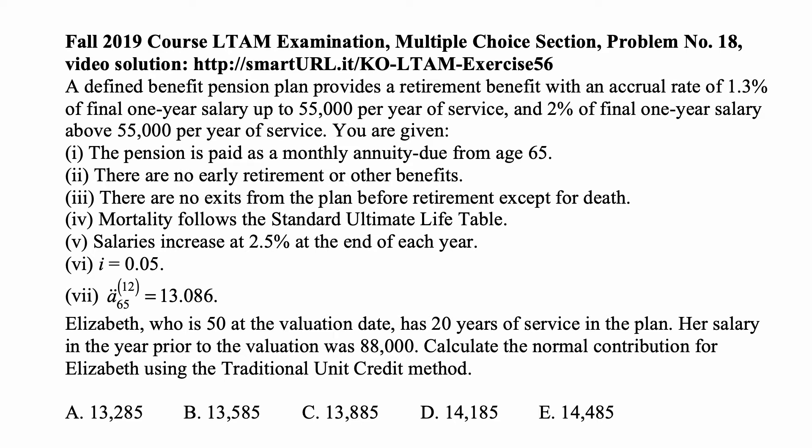A defined benefit pension plan provides a retirement benefit with an accrual rate of 1.3% of final one-year salary up to $55,000 per year of service and 2% of final one-year salary above $55,000 per year of service.